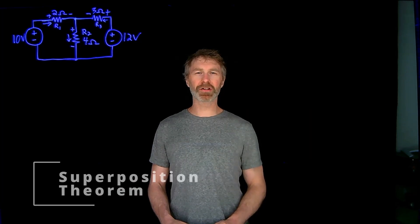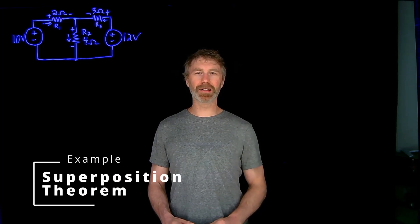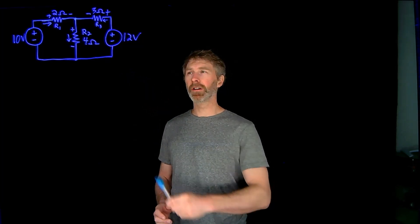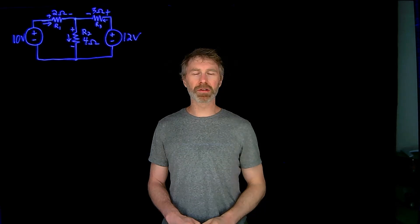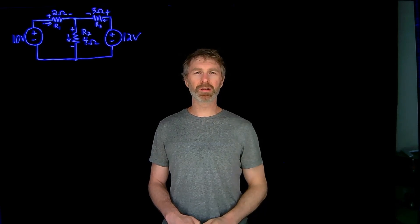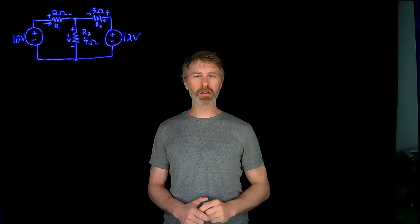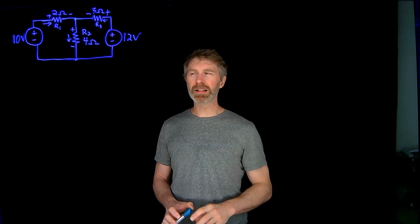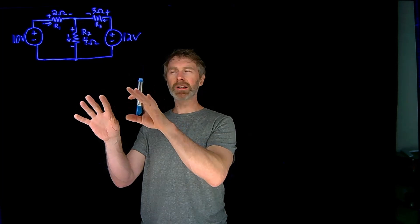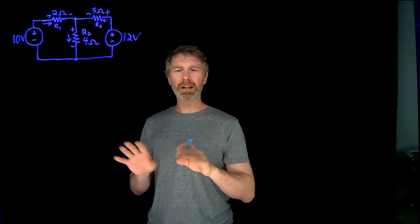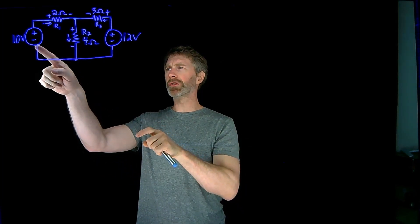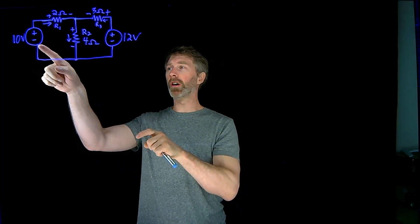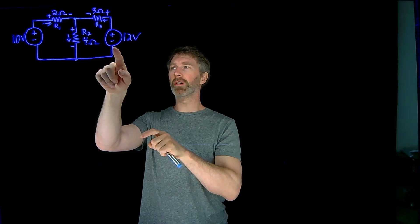Welcome to the electronics channel. In this video I'm going to analyze this circuit, figuring out the currents through and the voltages across all the resistors using the superposition principle. The superposition principle is the idea that we can analyze this circuit by splitting it — in this case into two different analyses: one with the 10-volt source turned on and the 12-volt source turned off,